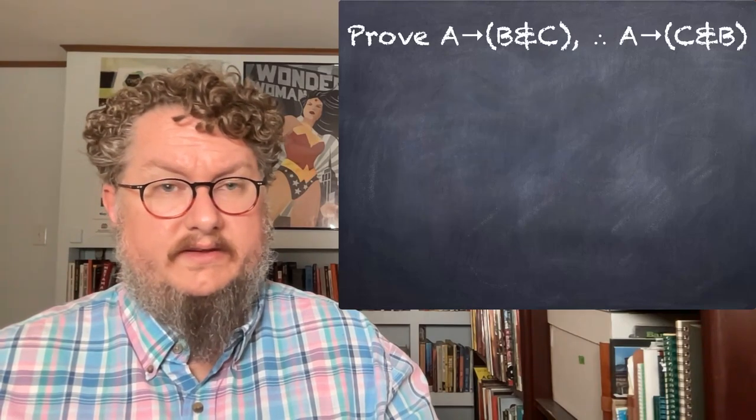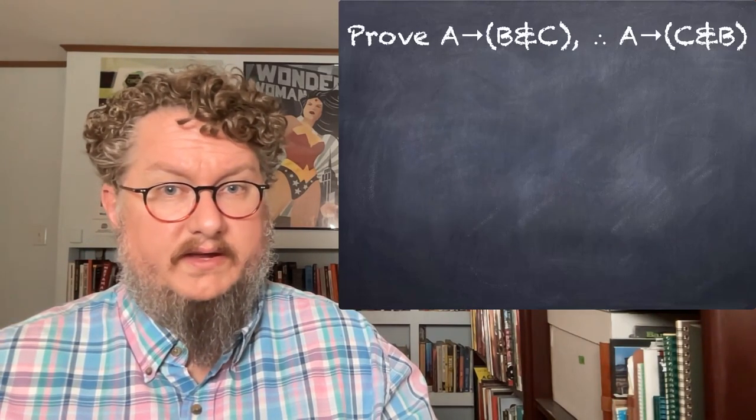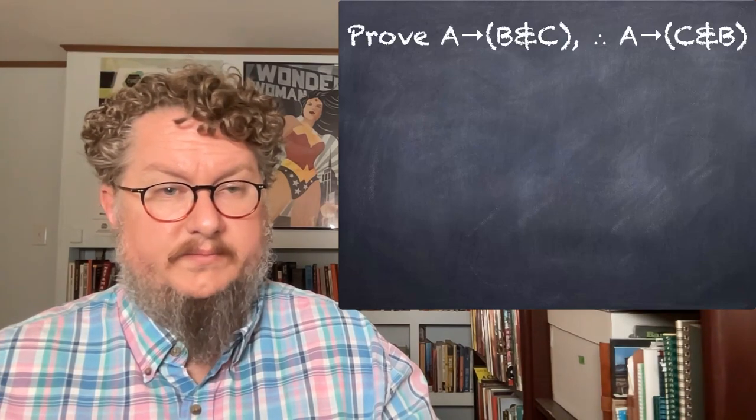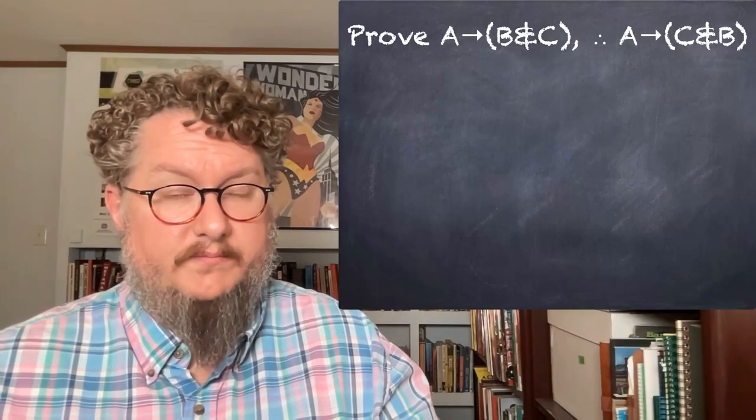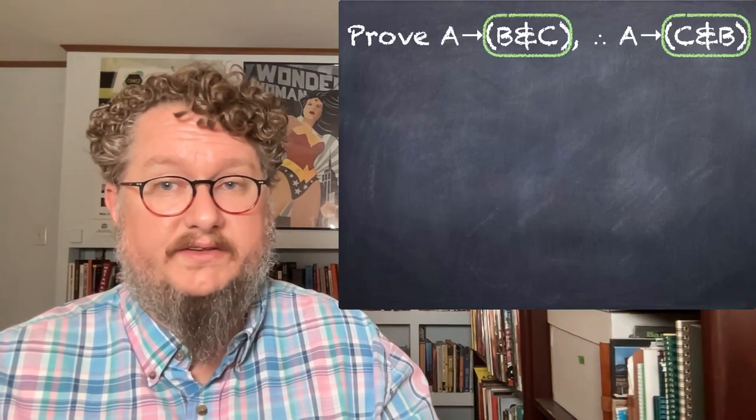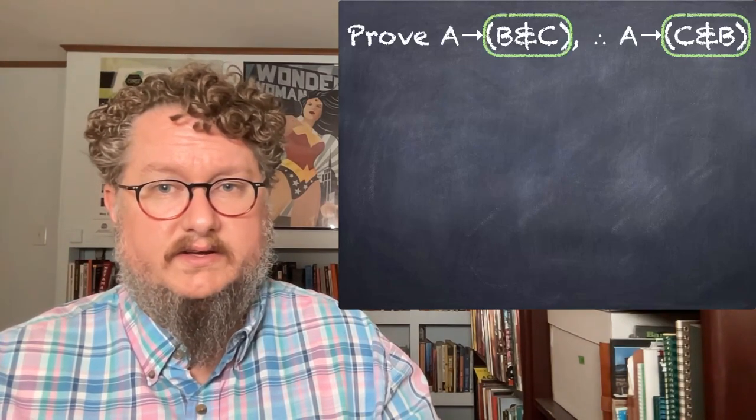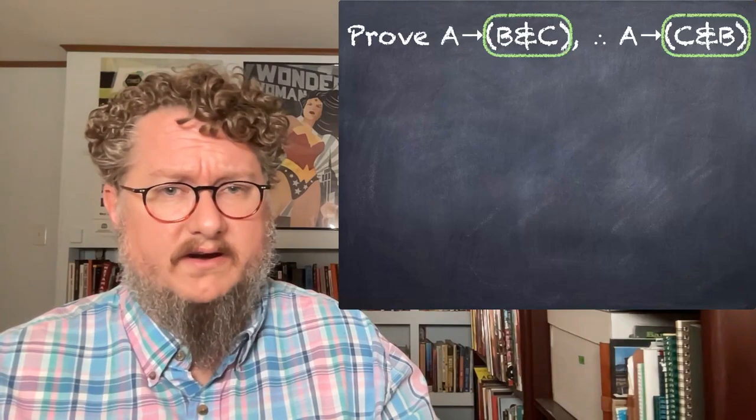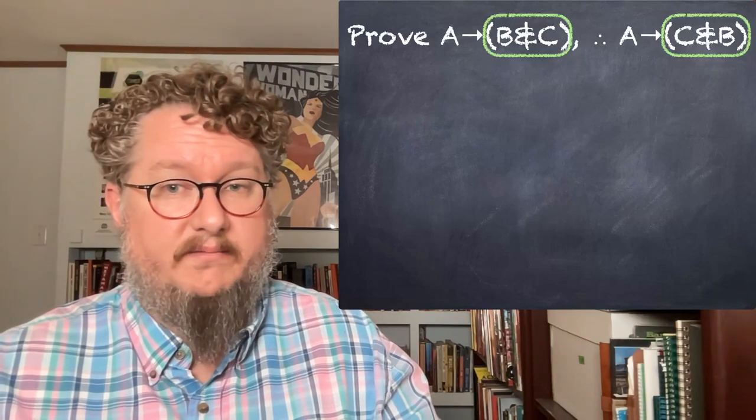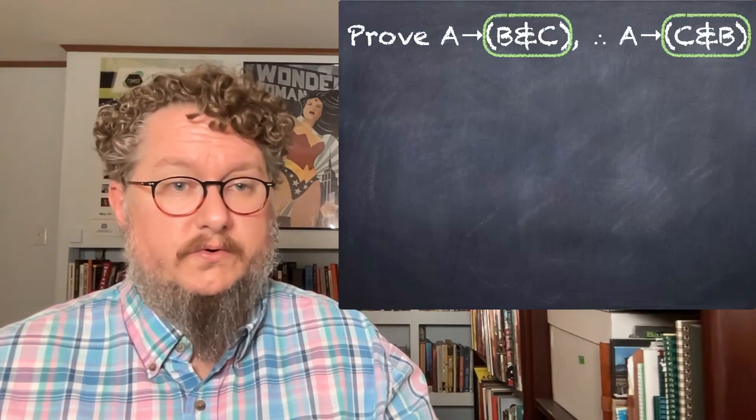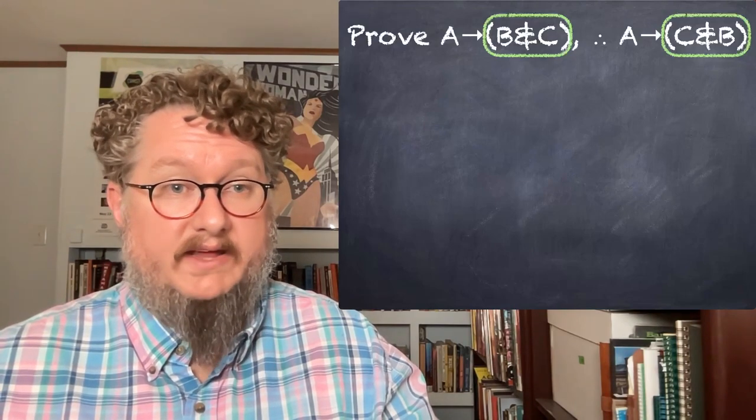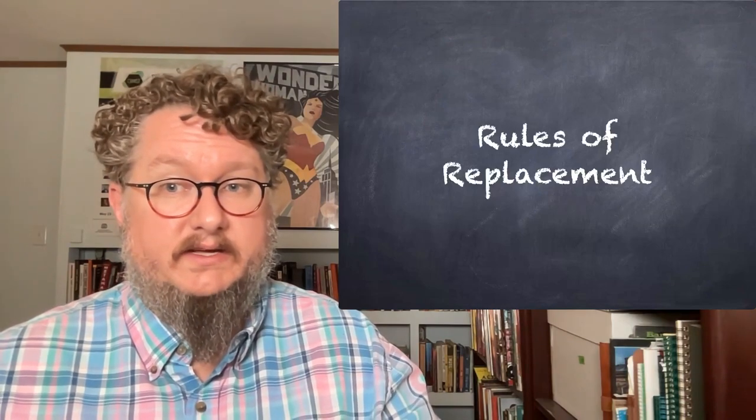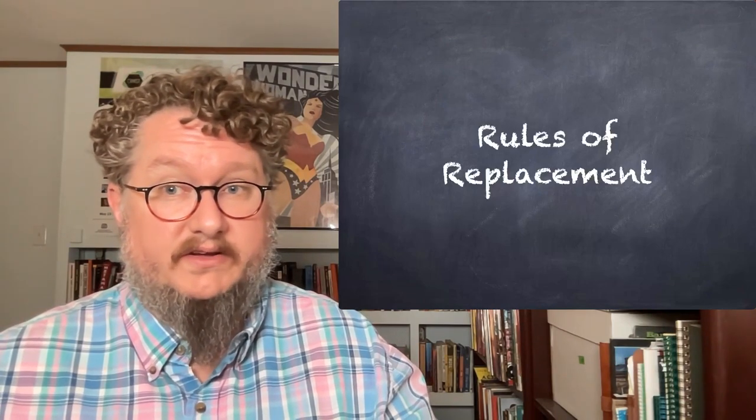Let's look at another example. This seems like a fairly intuitive thing to prove if A then B and C. Therefore, if A then C and B. It seems like we ought to be able to do that pretty easily, and we could. But notice that these two sub-expressions, these two components of the expression, are logically equivalent sentences. We know that the conjunction, the order doesn't matter. B and C, C and B, they mean the same thing. And there is a rule that allows us to replace that part of the expression. We call these rules of replacement. They involve substituting completely logically equivalent expressions or sub-expressions for one another.